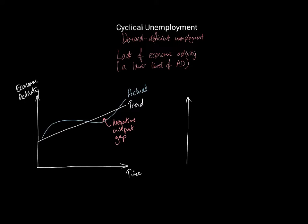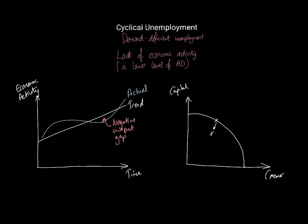Another way to think about this is in terms of a PPF diagram. If we consider capital goods and consumer goods on the axes, demand-deficient unemployment means we have moved to a point inside the PPF. Previously we would have been on the PPF with no cyclical unemployment, but as a result of a slowdown in economic activity, we move inside the PPF, which indicates underutilised resources.